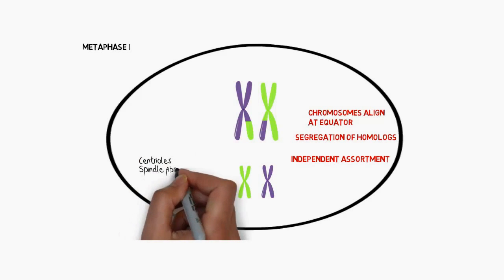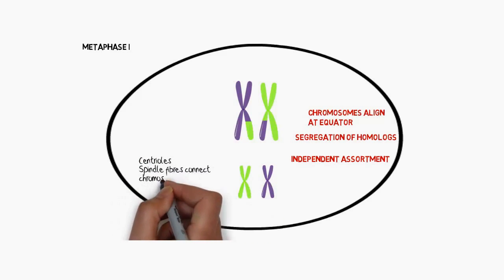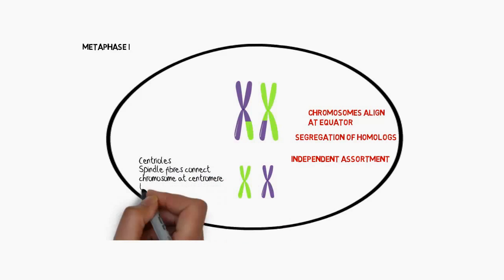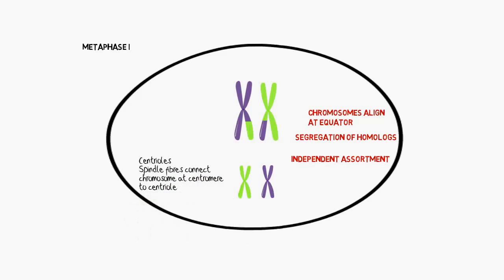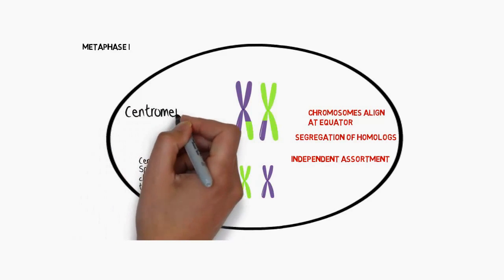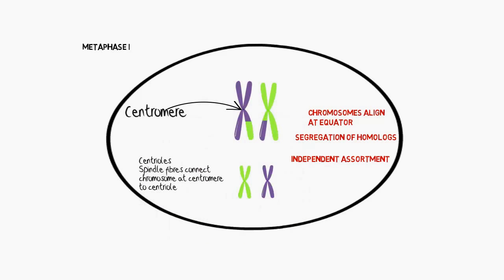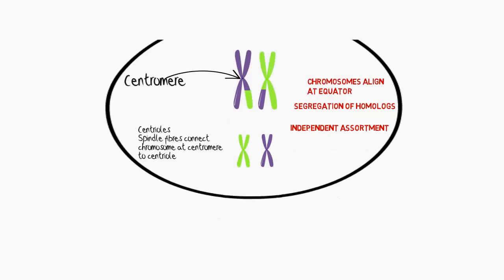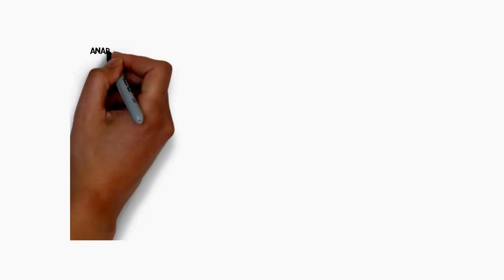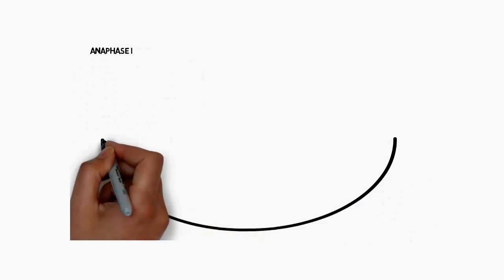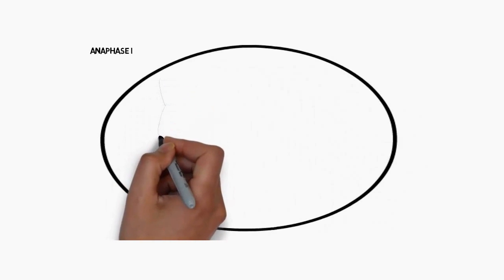We can also see independent assortment — the colours are separating, with the greens not going in the same direction and the purples not going in the same direction. This is completely random. The centromere is drawn in, and spindle fibres from the centrioles in animal cells — not plant cells — are responsible for drawing the chromosomes apart from each other.